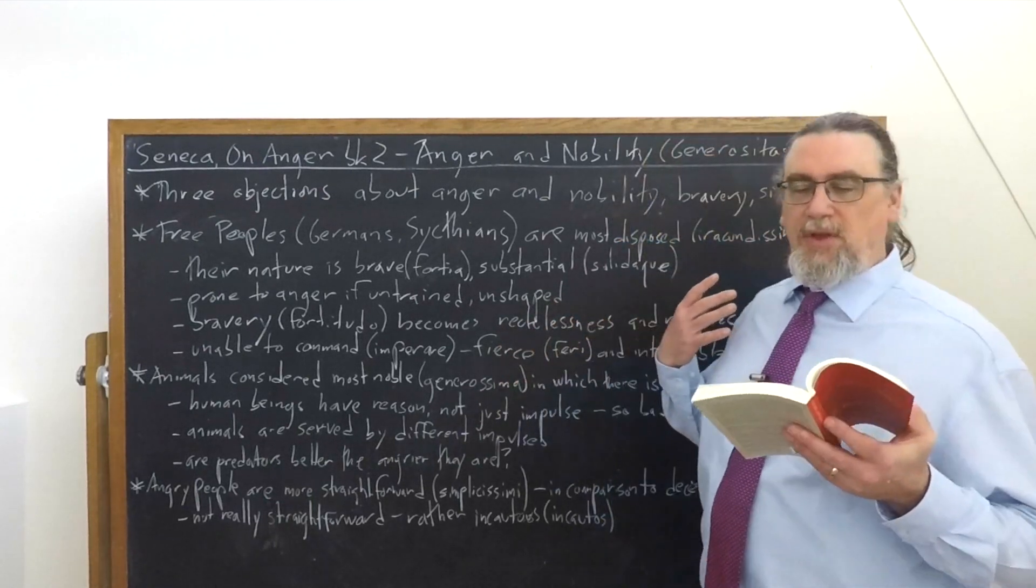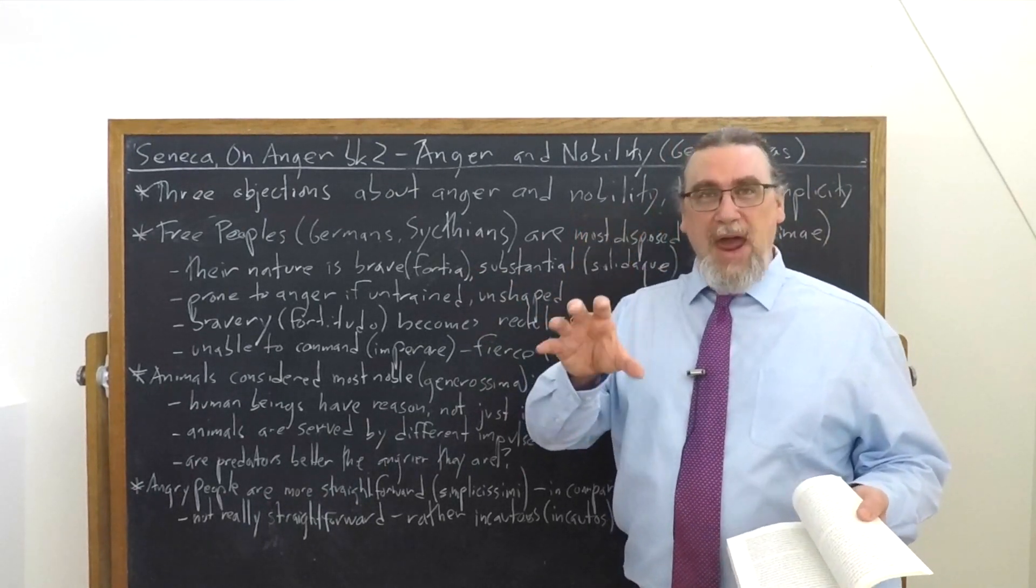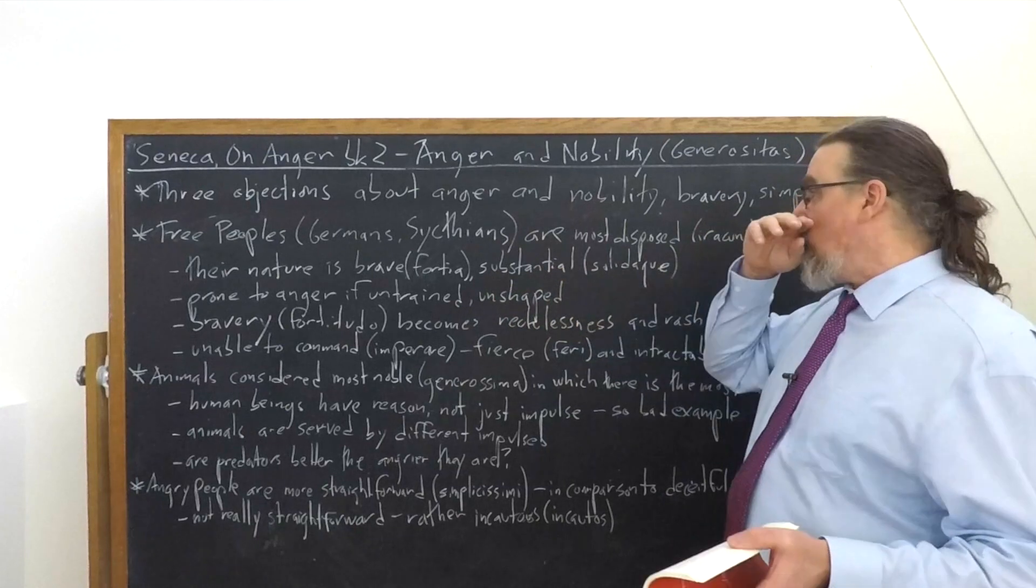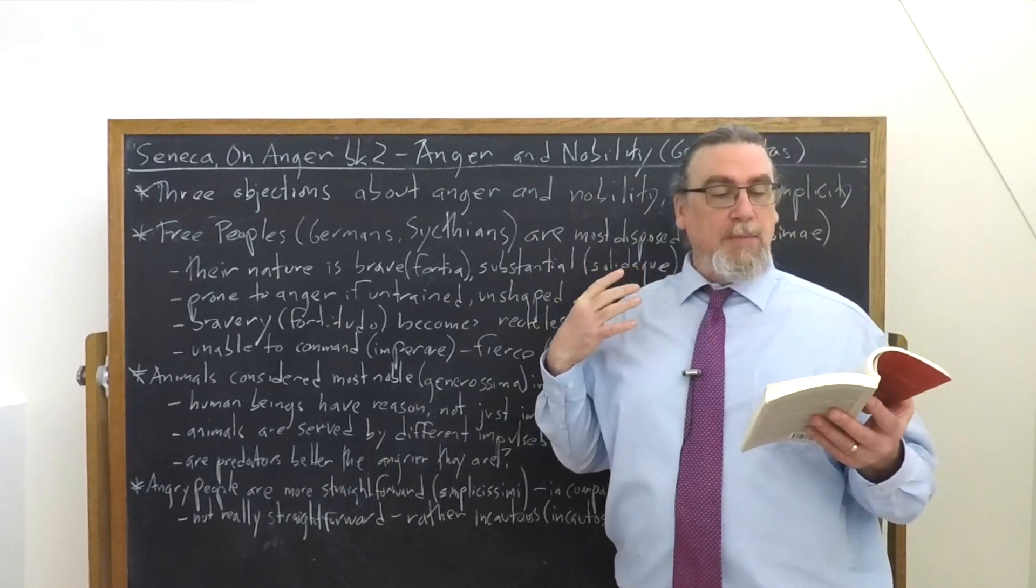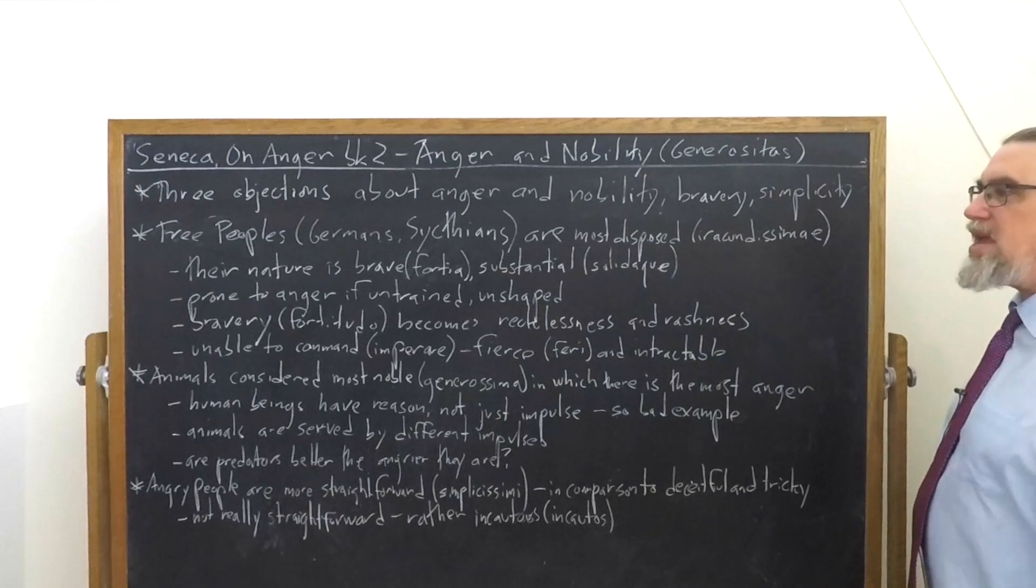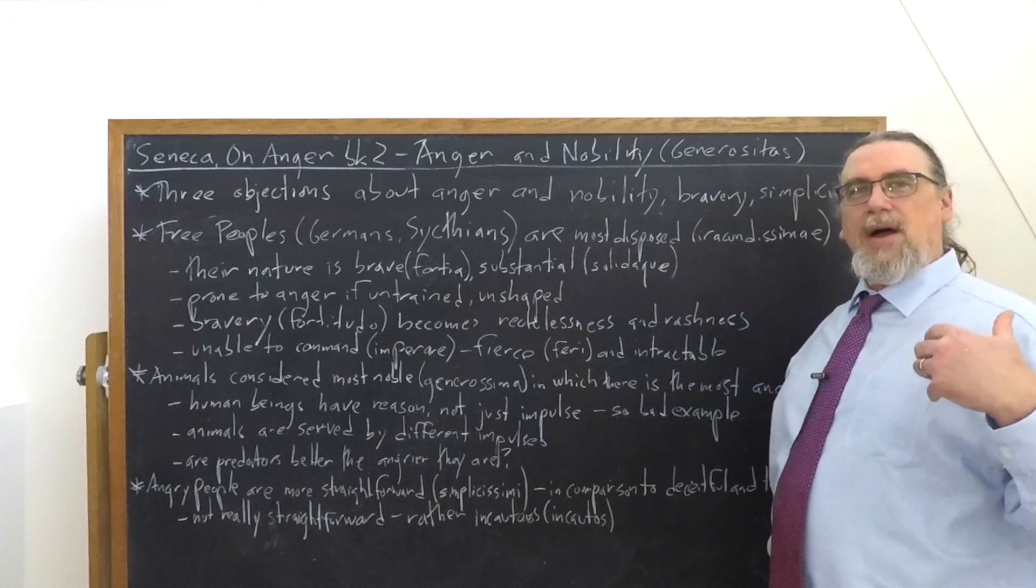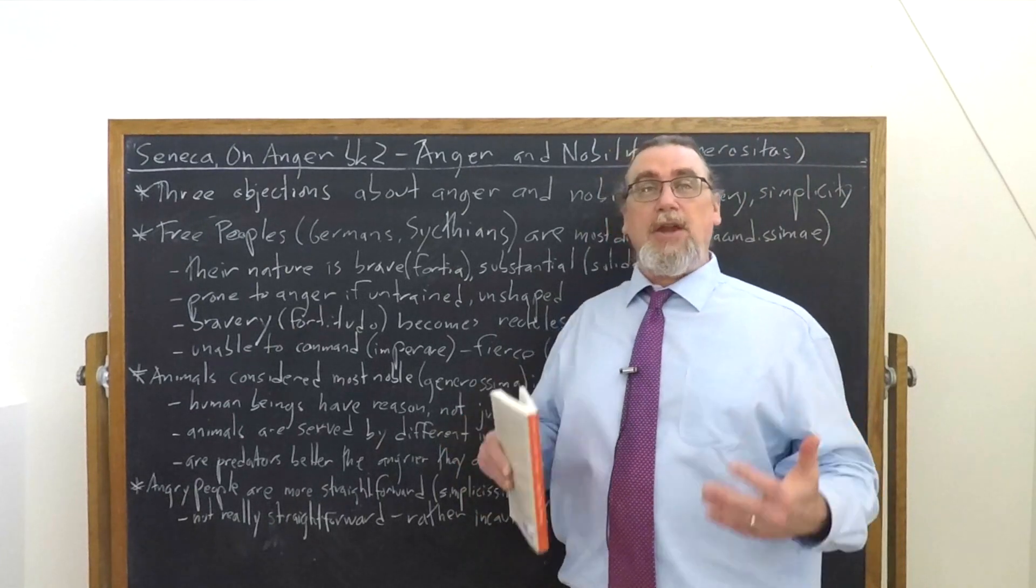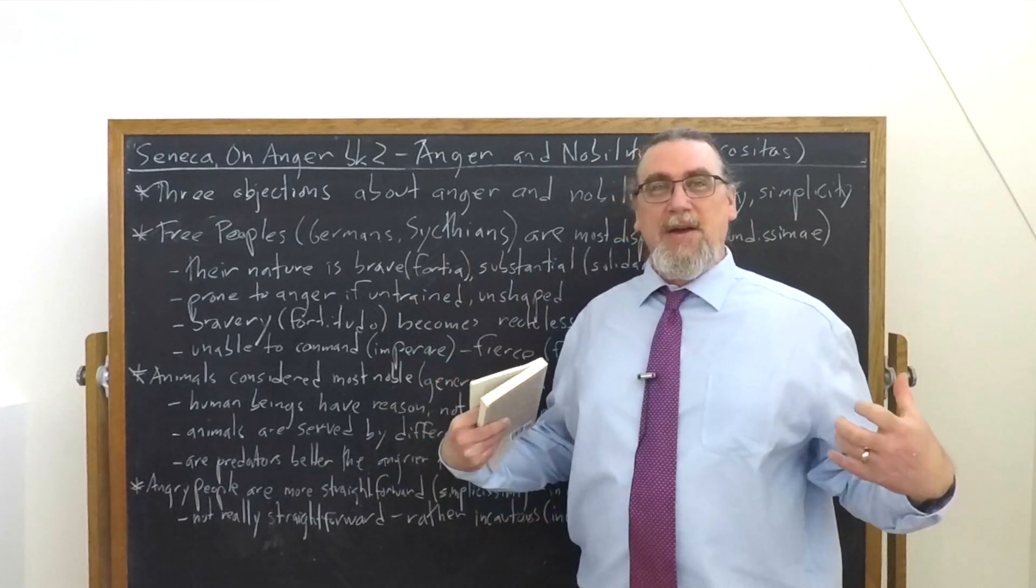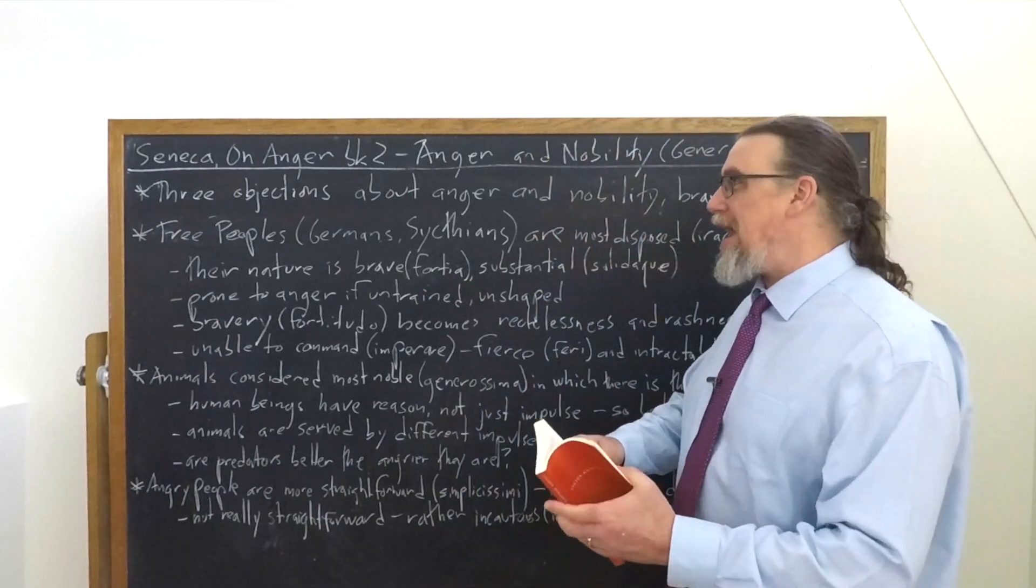And I think it's important to pause there on that term because Seneca earlier on in book one, talks about irakundia as being the disposition, the motivational structure or habit that disposes a person to get angry much more easily, to not be in control of their anger. So he's saying that a lot of people will point out that there's entire societies, entire races of people who are like that. And Seneca says, all right, yeah, there's something to this. I guess this happens because naturally brave people who have a nature, a natura, and it's sort of part of who they are in Genia. People who have a brave nature and a substantial nature, solidiqui, are going to be prone to anger if something doesn't happen. It doesn't mean that they're naturally going to just be angry all the time. It's when they're untrained or as he's going to say a little bit later, unshaped.